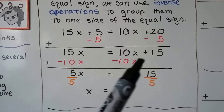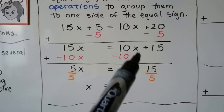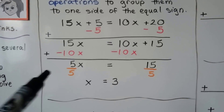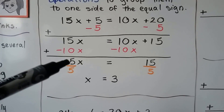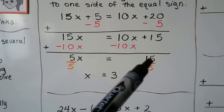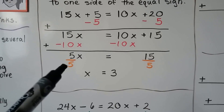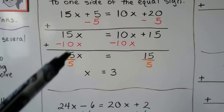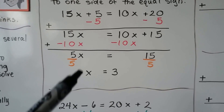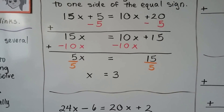We still need to get the x's together. So we take this 10x away from this side and take a 10x away from this side. That's going to make this go down to a 5x, and this will be 15. Now we have 5x equals 15. We divide both sides of the equation by the coefficient 5 — same numerator and denominator — and we get 1x, remember the invisible 1, and this is going to be a 3. So x equals 3.